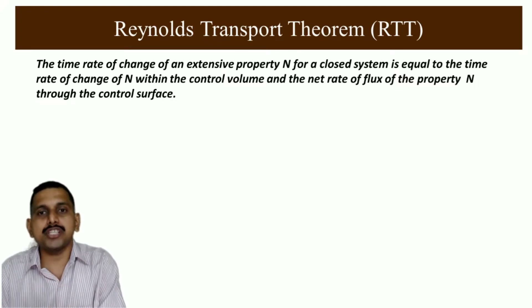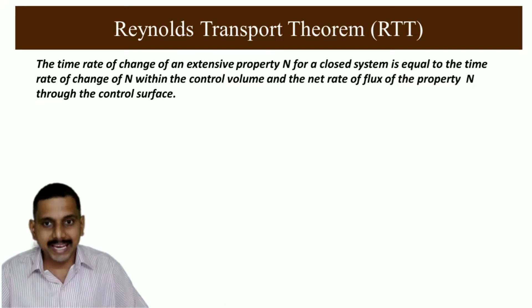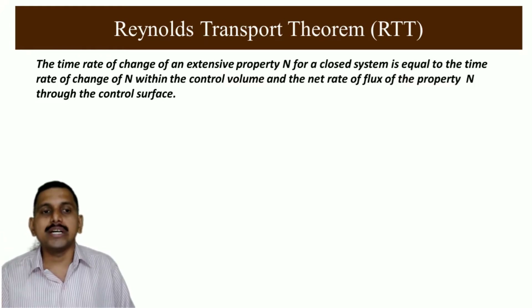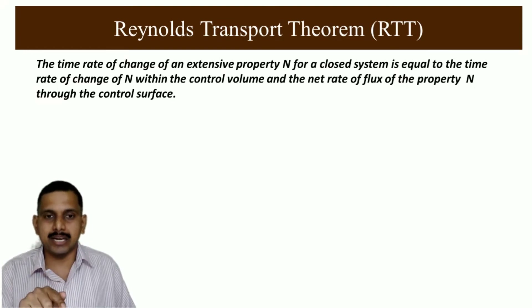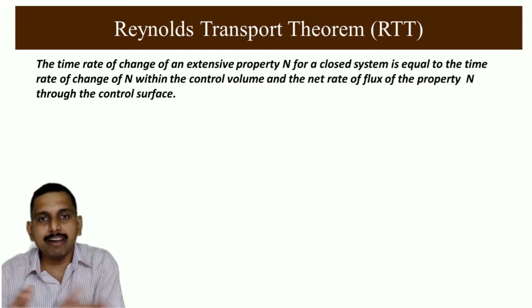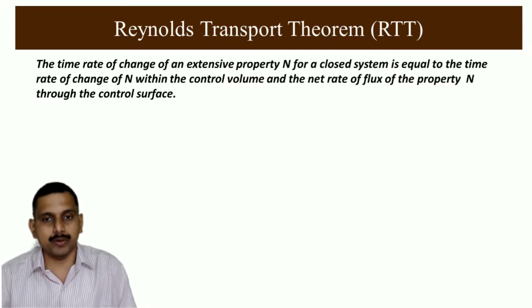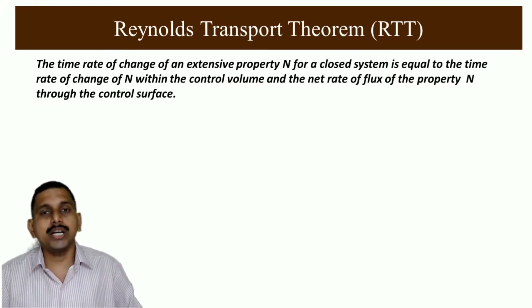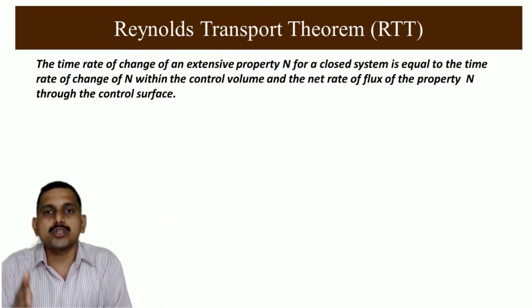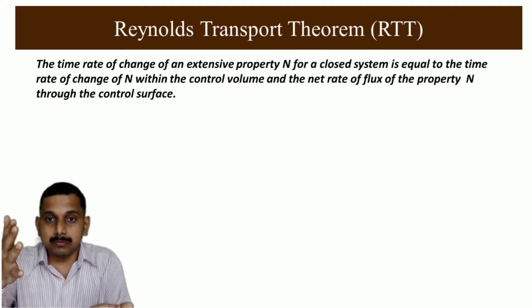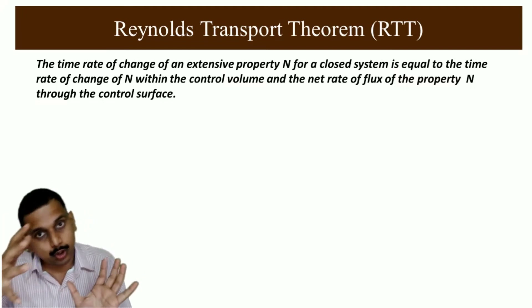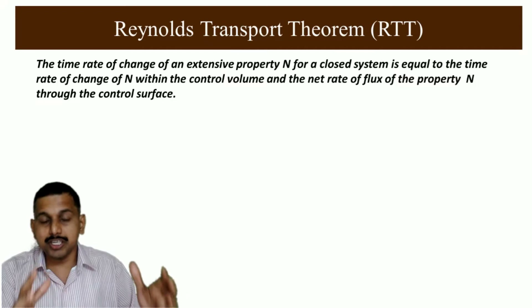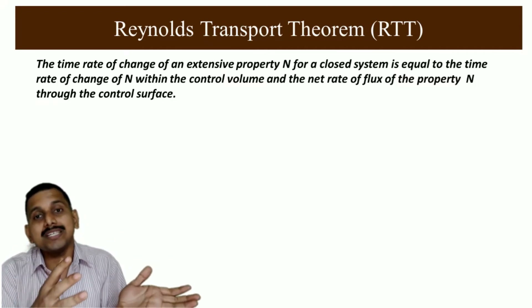The time rate of change of an extensive property for a closed system is equal to the time rate of change of that property within the control volume plus the net flux of the property through the control surface. Flux means the rate at which the property is going out through the control surface. So the rate of change of the extensive property of a control mass equals the rate of change inside the control volume plus the rate of flux.